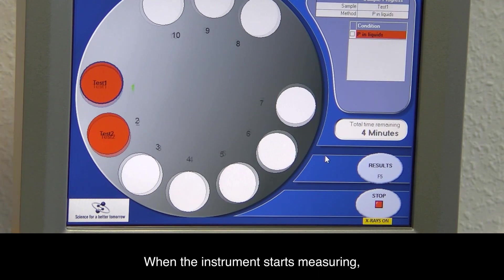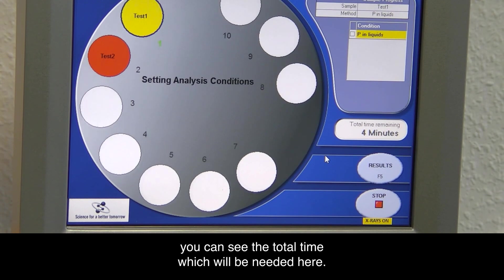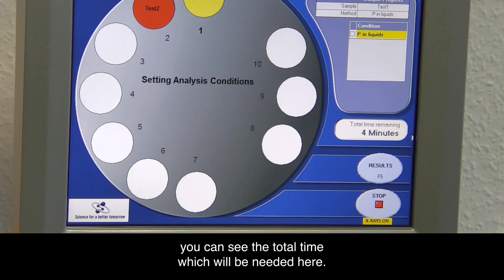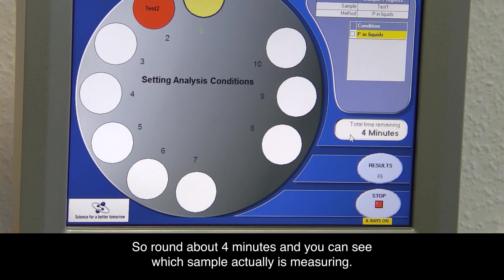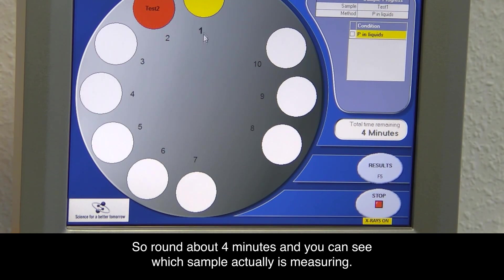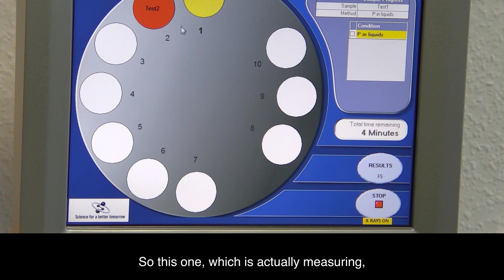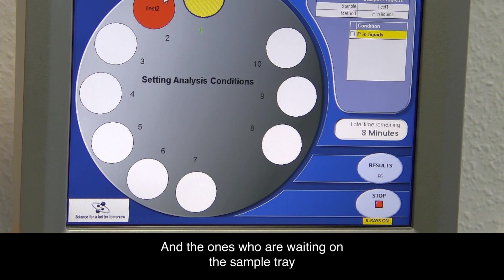When the instrument starts measuring, you can see the total time which will be needed here, around about four minutes, and you can see which sample is actually measuring. The one which is actually measuring turns to yellow color, and the ones waiting on the sample tray are still red color.